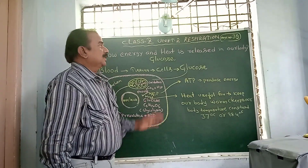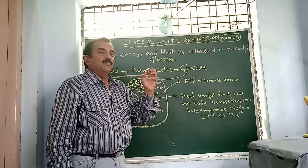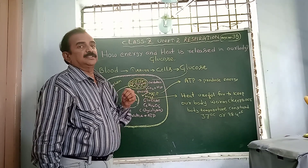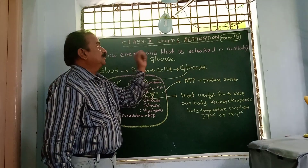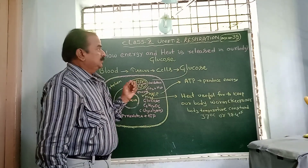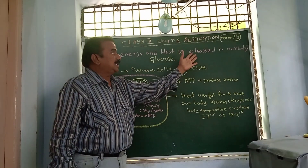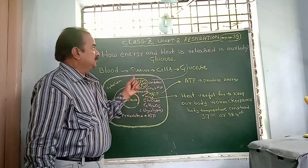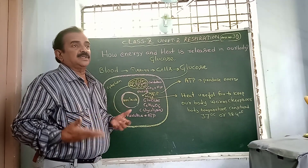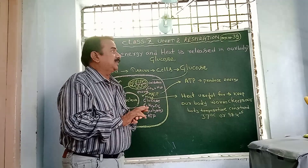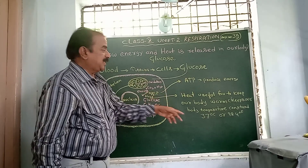Hello children, today we are going to discuss an important concept taken from page number 39, related to respiration. First we need to understand how energy and heat are generated and released in the body. Our body temperature is always kept constant — if you hold the hand of your friend, it shows about 37 degrees centigrade or 98.4 degrees Fahrenheit.